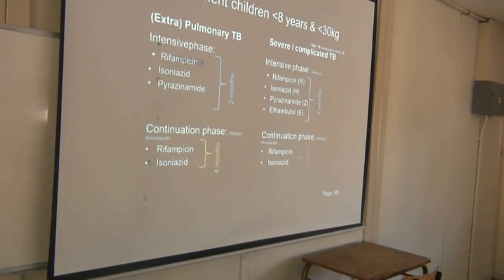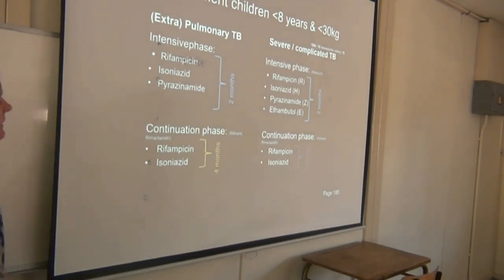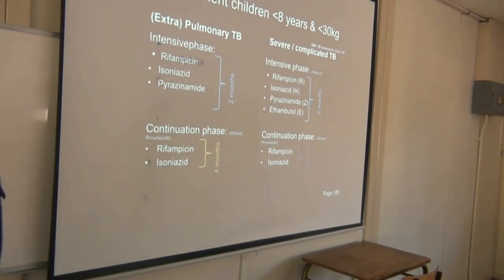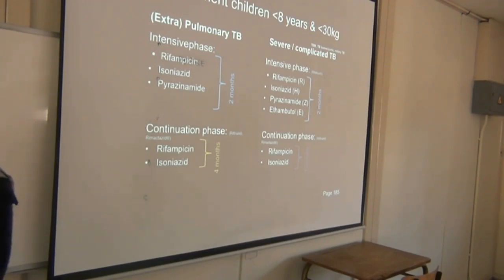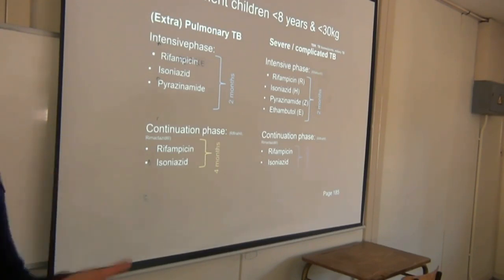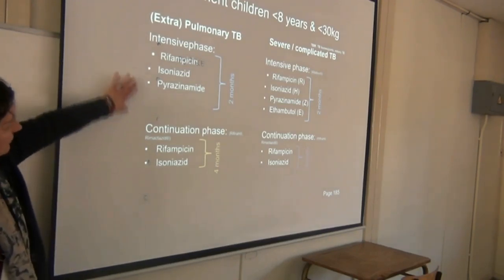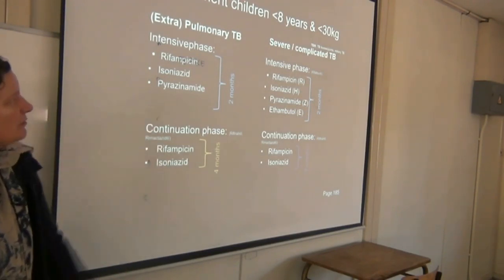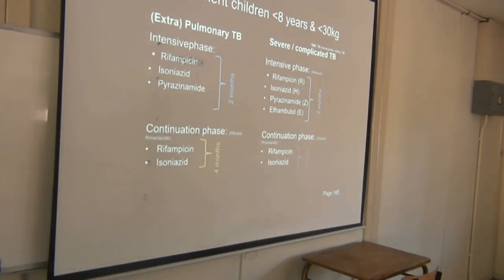For children less than eight years or less than 30 kilograms, we usually omit ethambutol. The side effect we're concerned about is optic neuritis, and you can't really do a vision test in young children because they need to tell you what they can see. So we don't use ethambutol for kids in simple TB regimens, but for complicated TB you will add ethambutol.